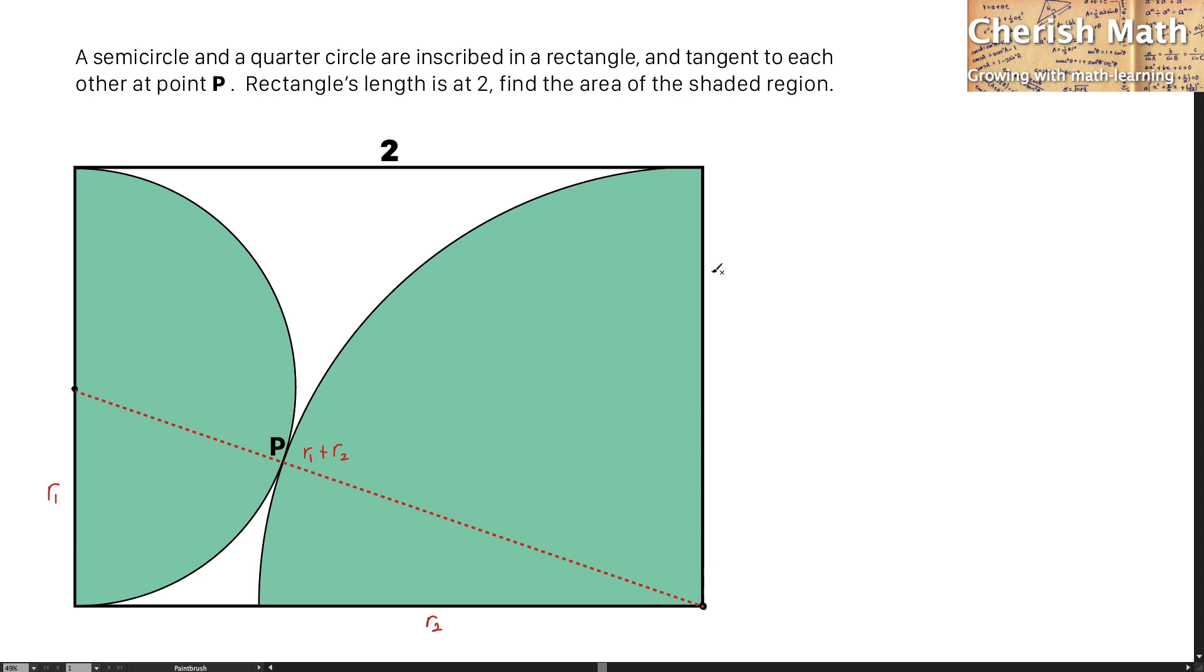For the first equation, the relationship of R1 and R2 is 2R1 equals R2. This is because the radius of the quarter circle is twice the radius of the semicircle.